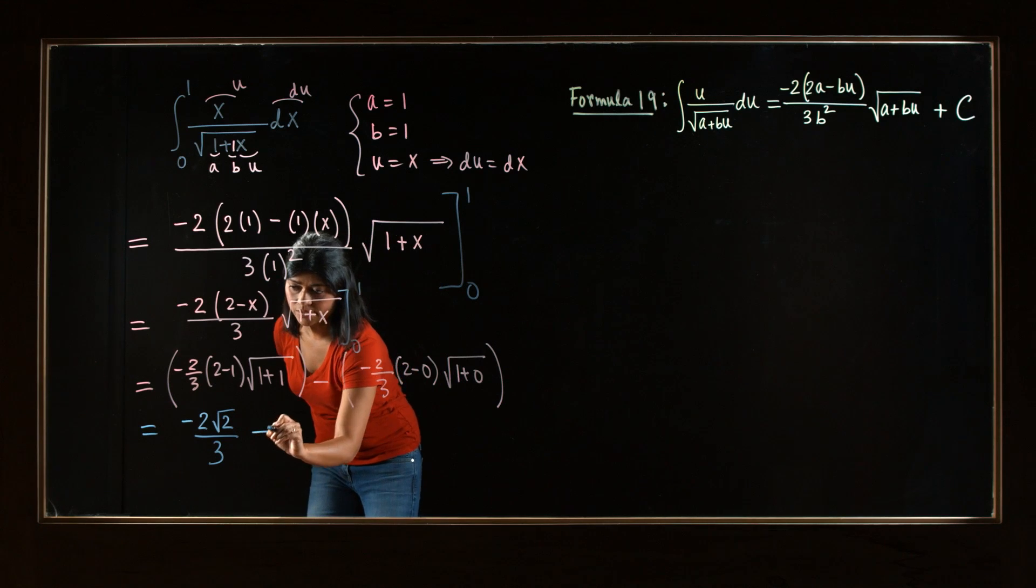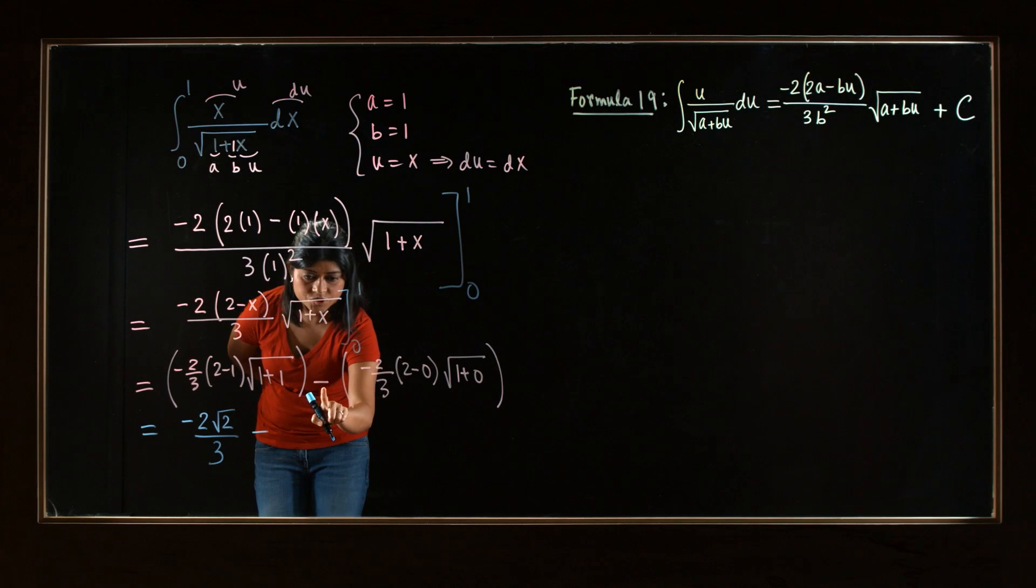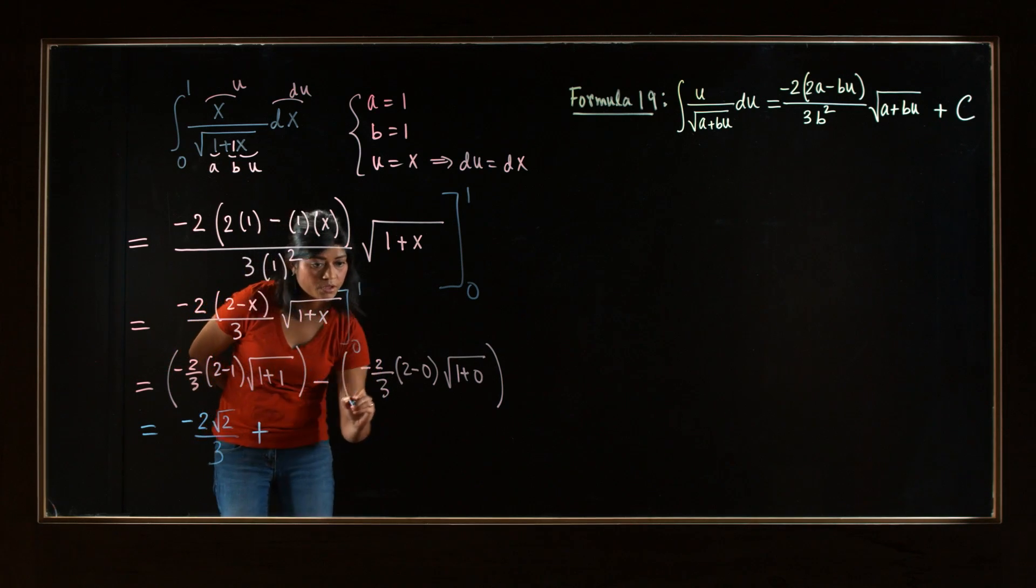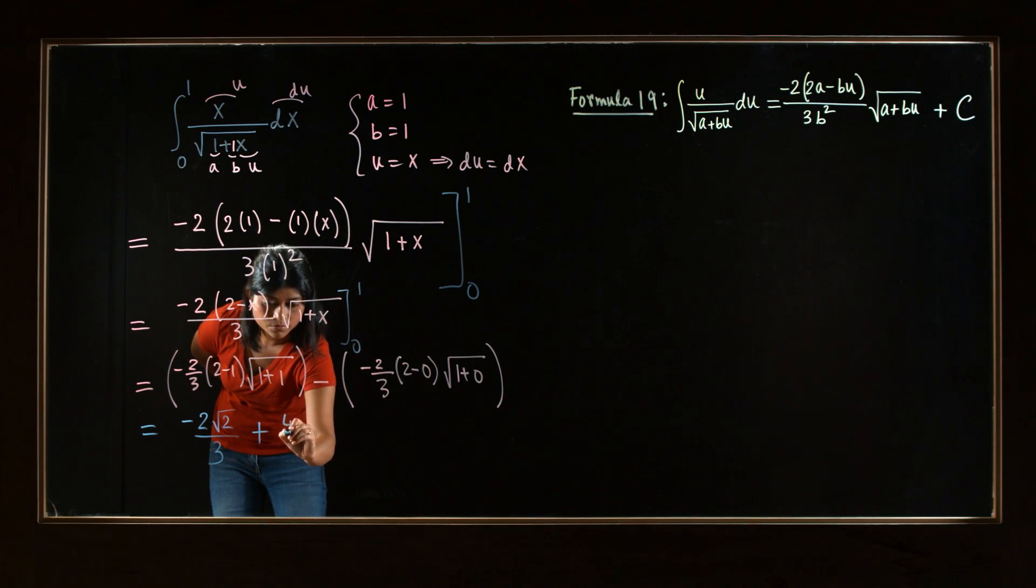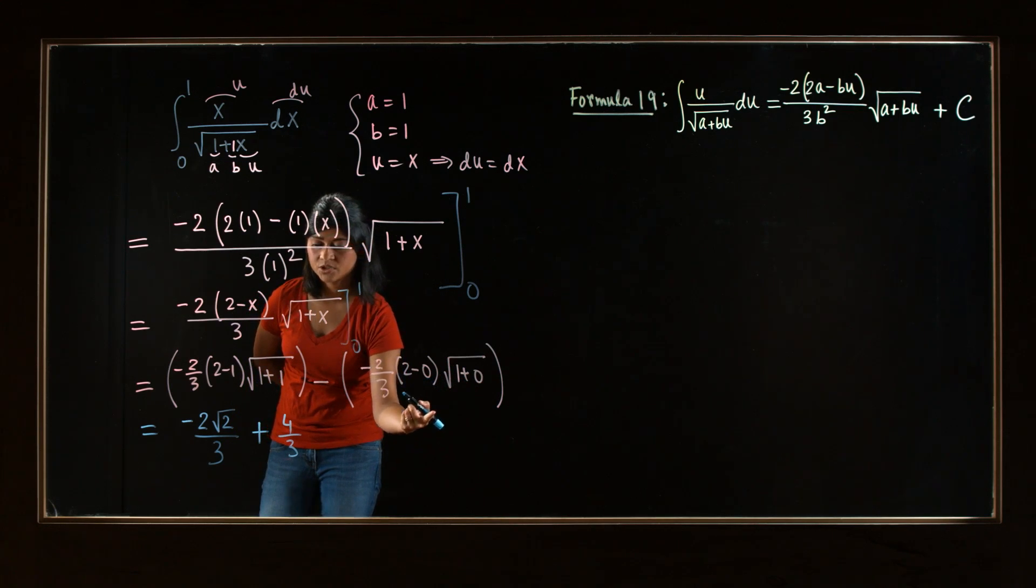And then, minus... Let's come back here. First of all, this negative and the negative will actually make it a positive. And then, we'll have 2 times 2, 4 3rd. And square root of 1 is just 1. So that's it.